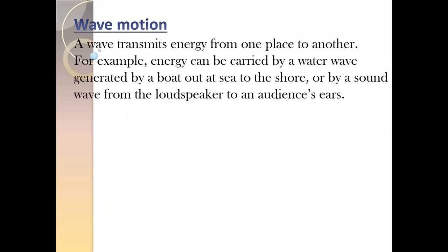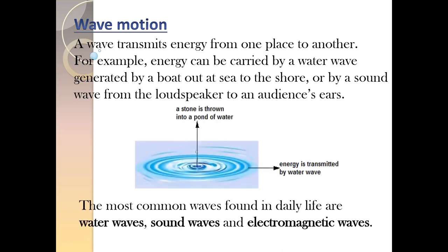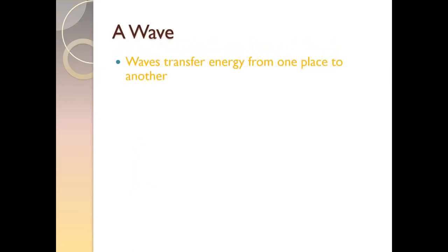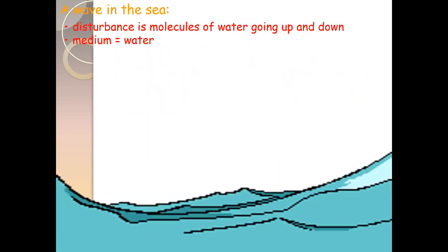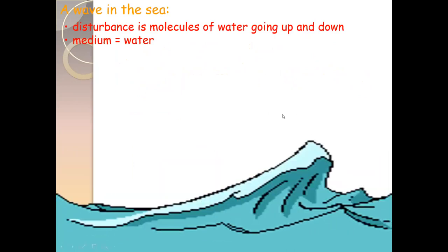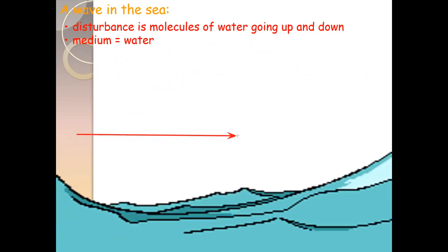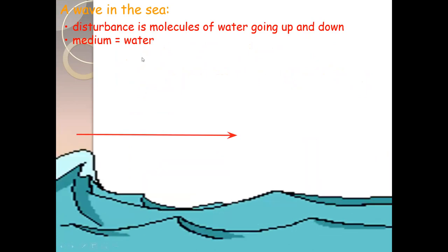A wave basically transmits energy from one place to another — it is a mode of energy transfer. For example, if you are calling someone, the energy transfers from you to the other person in the form of waves. As you can see with water waves, the particles are moving and they transfer energy from one place to another. This is a source: at this point water is produced, and the water wave travels from one place to another, transferring energy.